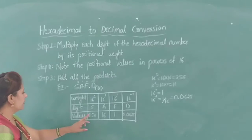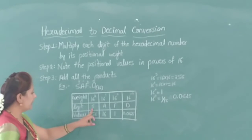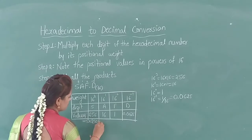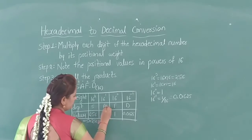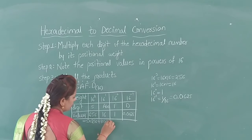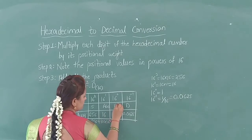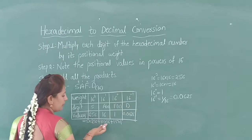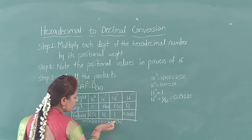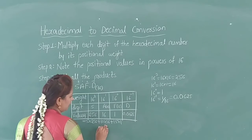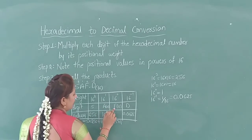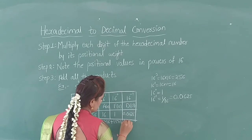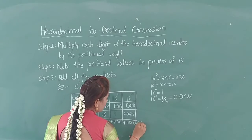Next, multiply each digit of the hexadecimal number by its equivalent positional values. The decimal number A is represented as 10, F is represented as 15, and D is represented as 13. So: 5 into 256, plus 10 into 16, plus 15 into 1, plus 13 into 0.0625.